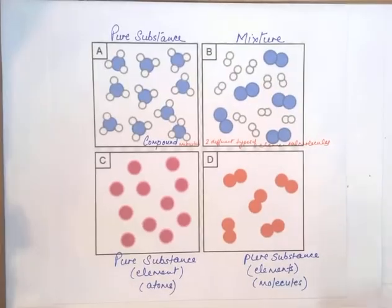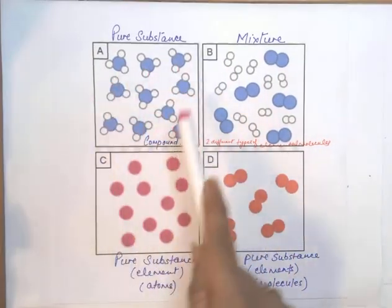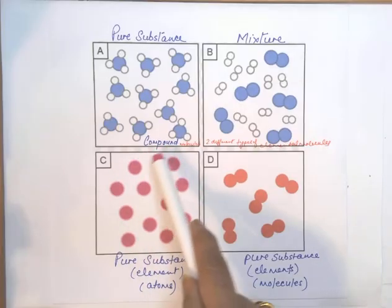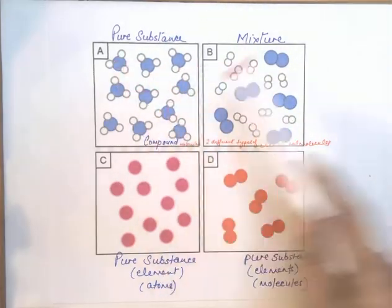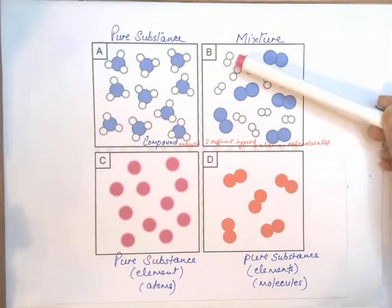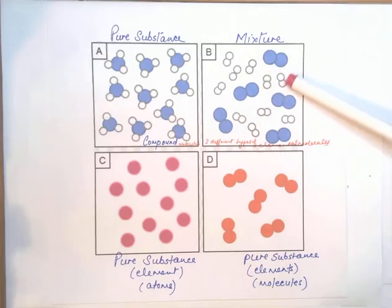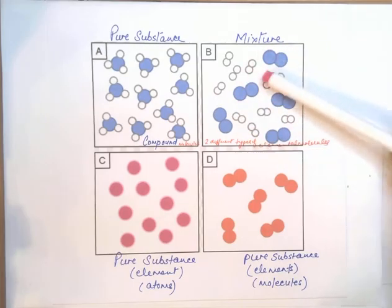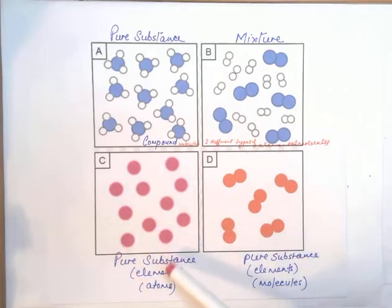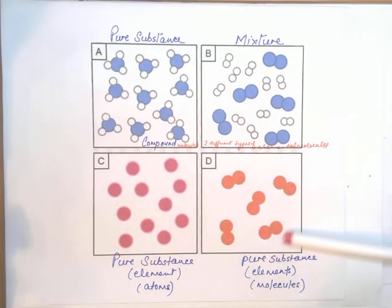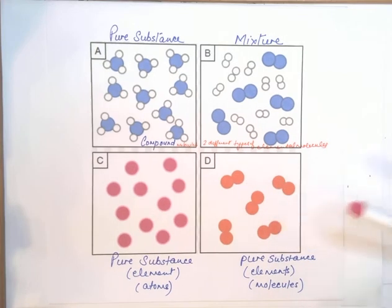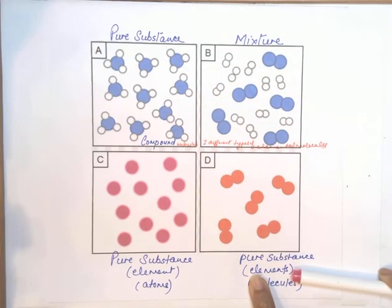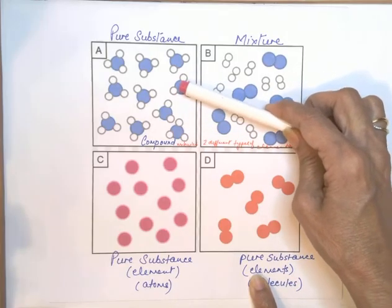Look at these particle diagrams. For a pure substance, the composition from top to bottom is the same. In a compound, which is made up of two or more different atoms, the molecules are uniform throughout. A mixture shows two different types of elements mixed together. An element shows just atoms of the same type. An element can also appear as molecules when two same types of atoms react chemically. The key distinction: molecules made of two same types of atoms are an element; molecules made of two different kinds of atoms are a compound.